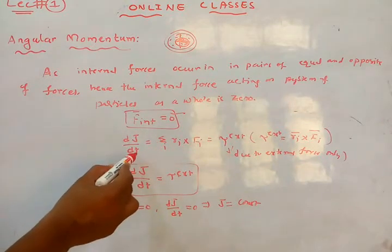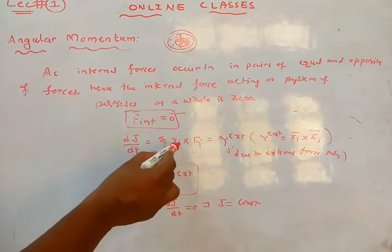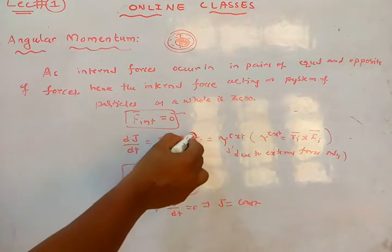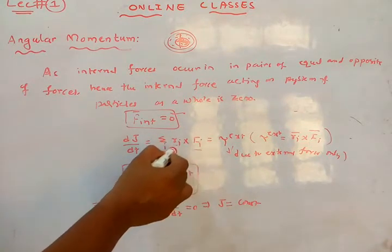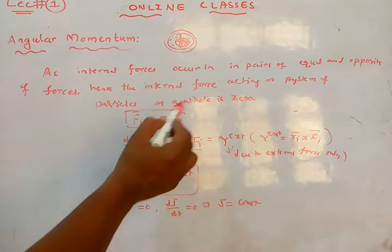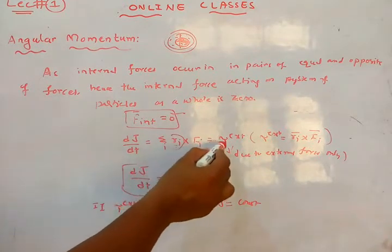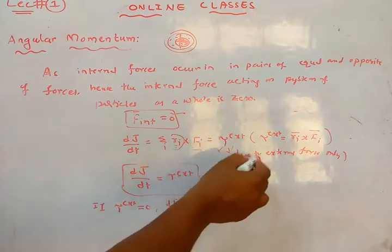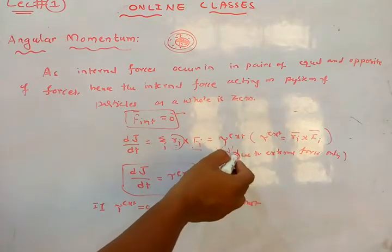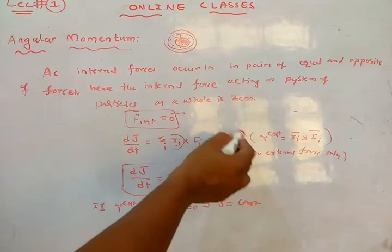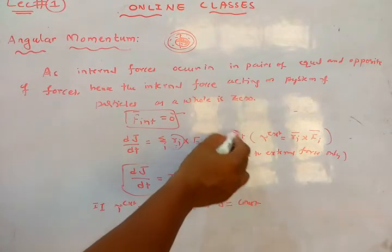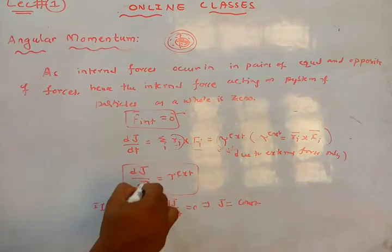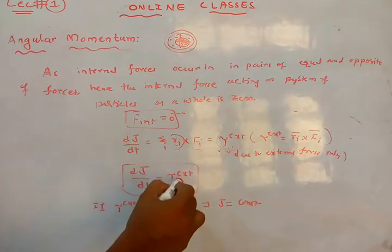The external force is equal to dJ/dt, given by sigma of r_i cross F_i. Here r_i cross F_i represents the external force acting on the i-th particle and r_i is its position vector — this cross product is nothing but torque due to external force. So torque acts only due to external forces, not internal forces. Therefore torque external equals dJ/dt.